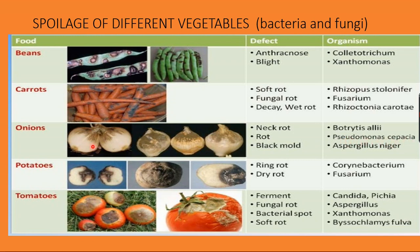Potatoes develop dry rot or ring rot caused by Corynebacterium and Phytophthora. Tomatoes undergo fermentation from Candida and Pichia yeast species, fungal rot causing black surface color from Aspergillus species, bacterial spot from Xanthomonas species, and soft rot from Pectobacterium carotovorum.